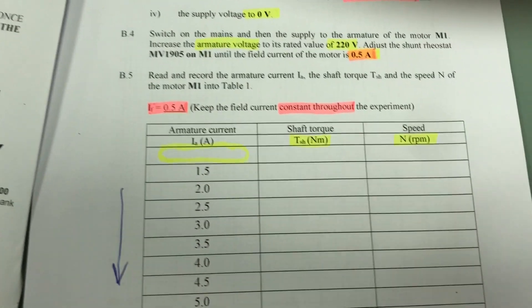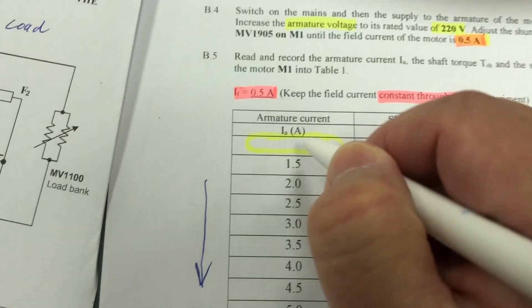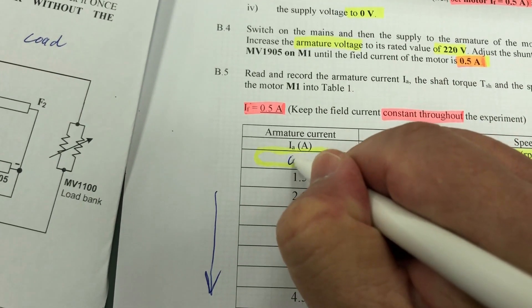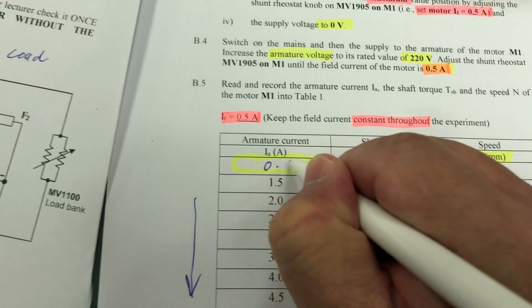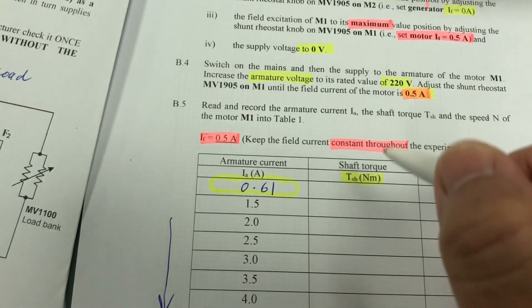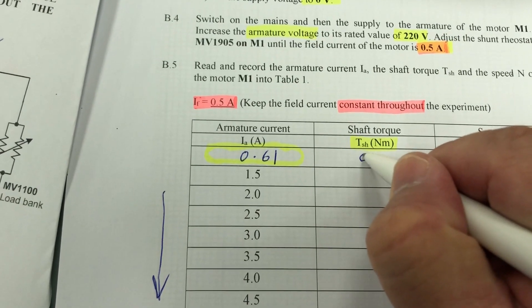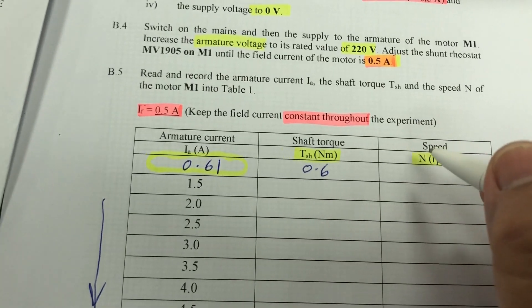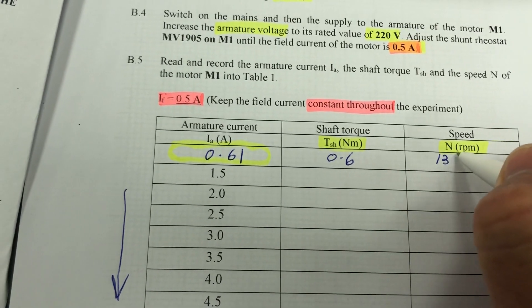All right. So let's decrease its value, rheostat. It's 0.61. The torque is 0.6 Newton meter. The speed is 1368 RPM.